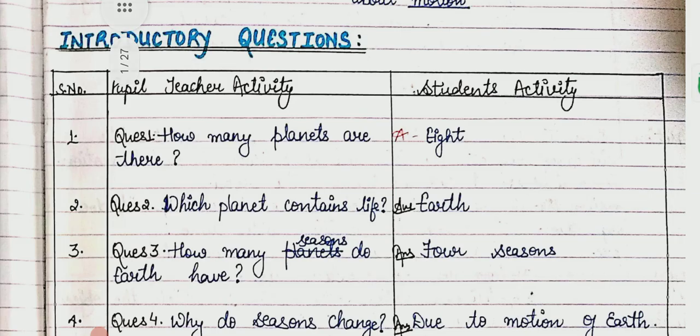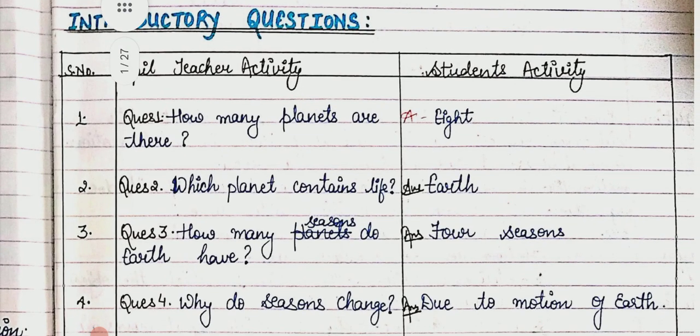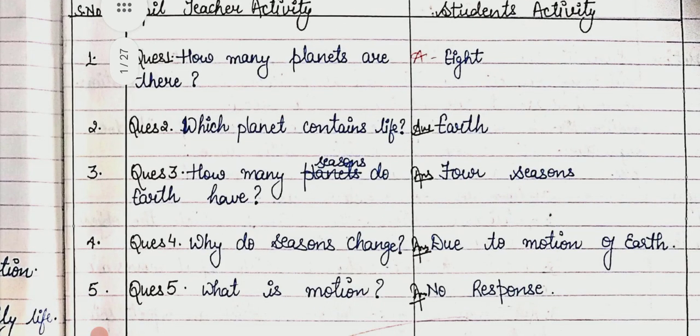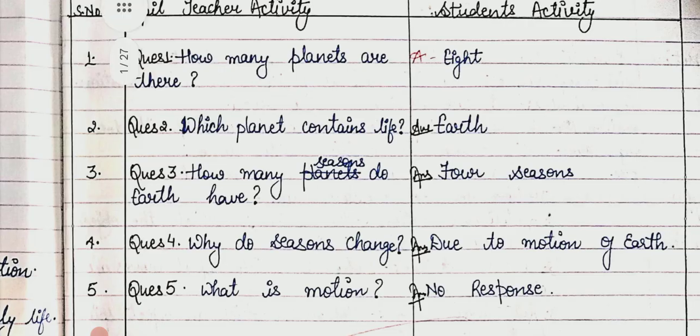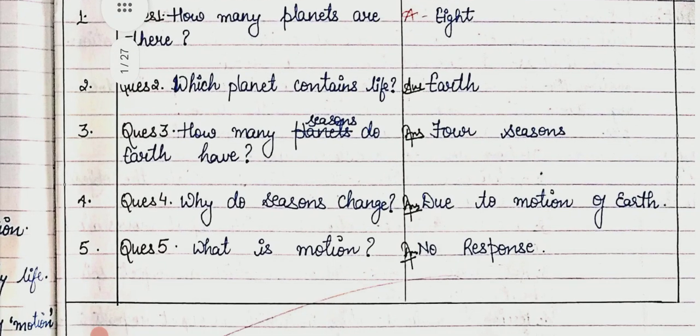All questions have a zigzag form. First question: how many planets are there? Student answer: eight. Second question: which planet contains life? Answer: Earth. Third question: how many seasons does Earth have? Answer: four seasons.